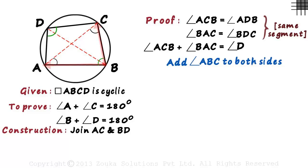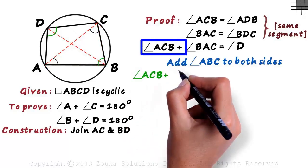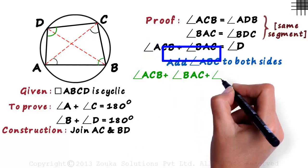You will realize that angle ABC is the only angle that is left out and we are looking for 180 degrees. With this step, we get angle ACB plus angle BAC plus angle ABC equal to angle D plus angle ABC.